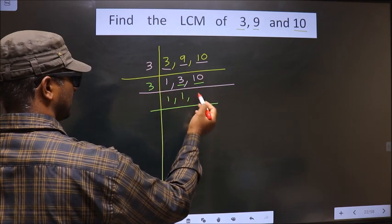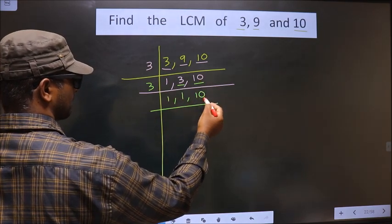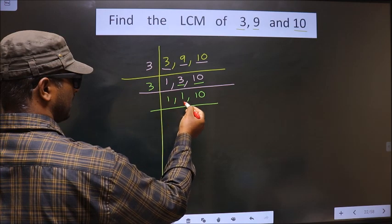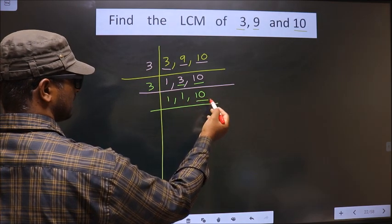So we take 3 goes into 3. 10 is not divisible by 3. So you write down 10 as it is. Here we got 1. Here we got 1.